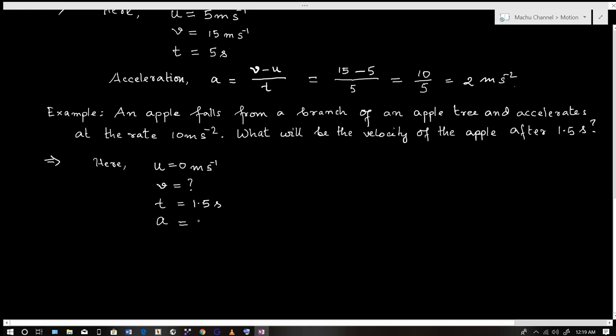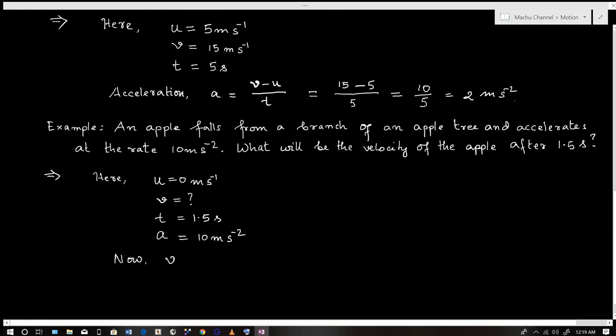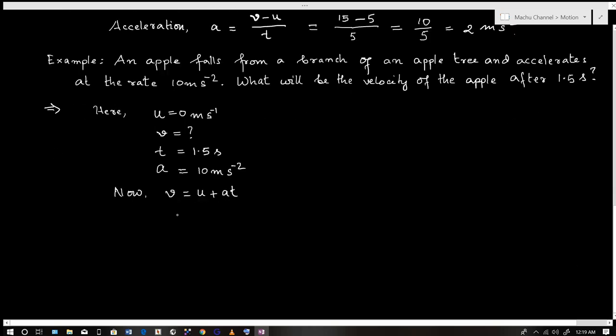Using the formula v equals u plus at: v equals 0 plus 10 times 1.5, which equals 15. Therefore, the velocity of the apple after 1.5 seconds is 15 meters per second.